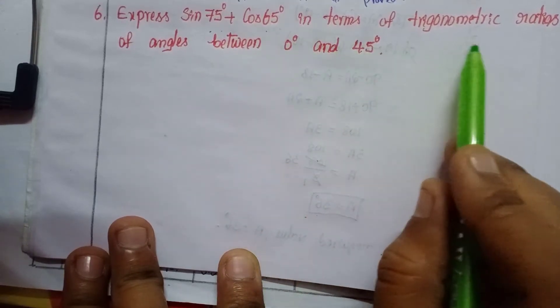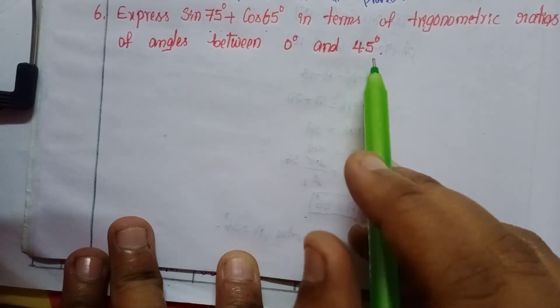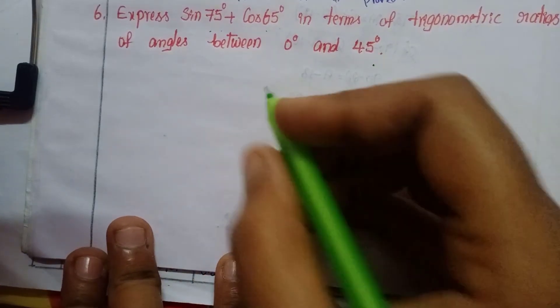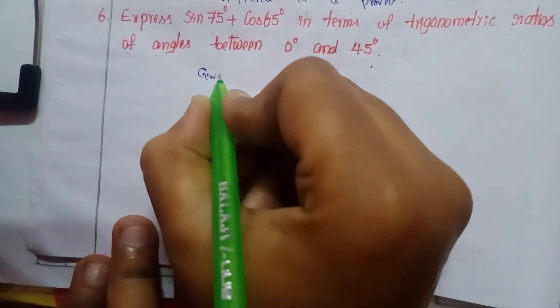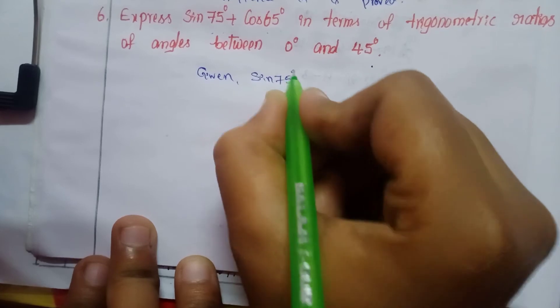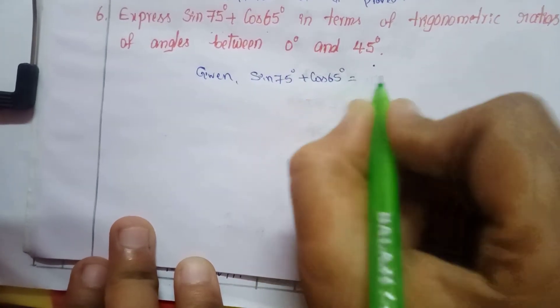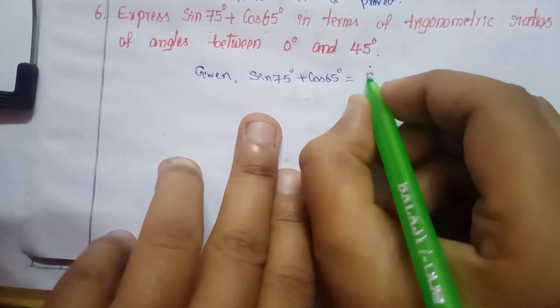in terms of trigonometric ratios of angles between 0° and 45°. Given: sin 75° + cos 65°. I can write sin 75° as